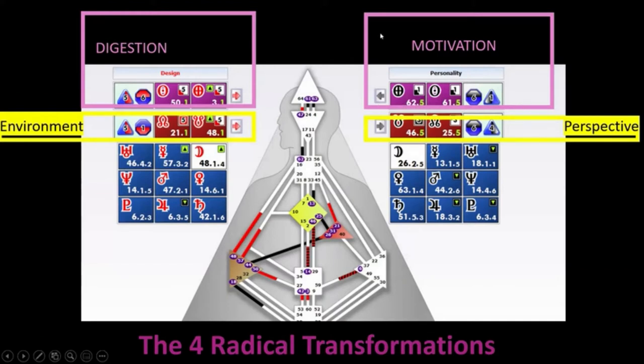The top is really the heart of the four radical transformations, meaning the motivation is uncovered as you eat correctly, as you're in the right environment, as you understand how you cognitively view the world. Then you align with your motivation.